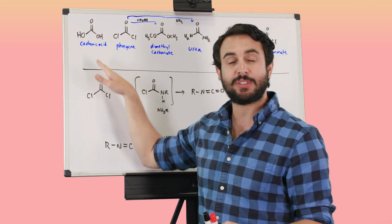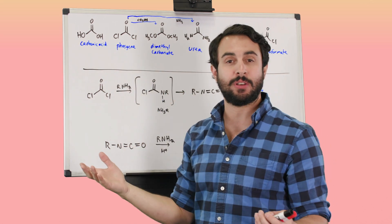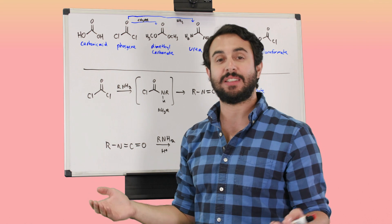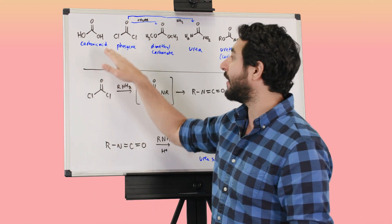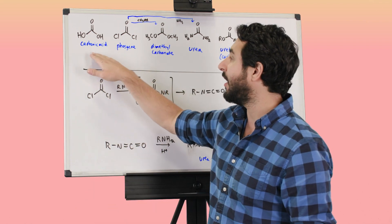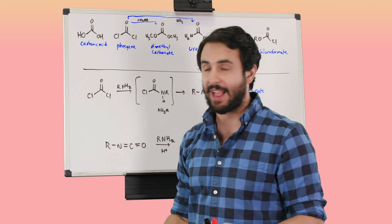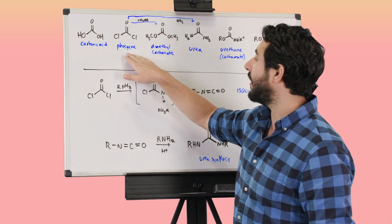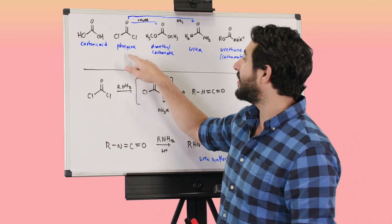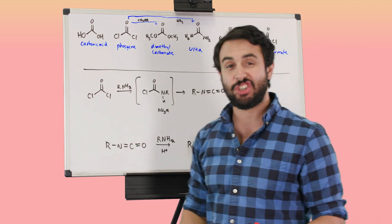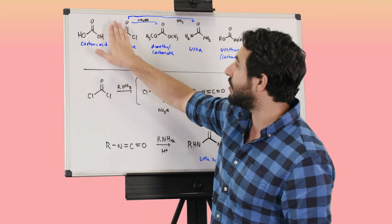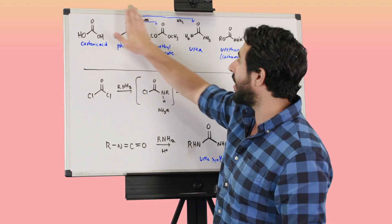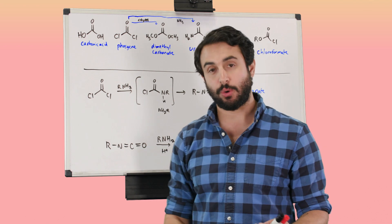Some of carbonic acid's derivatives are very important substrates or even intermediates in certain synthetic techniques, so we want to look at some of the derivatives of carbonic acid. Let's look at this dichloride — this is called phosgene. Just the way carbonic acid is sort of a double carboxylic acid, we could think of phosgene as sort of a double acid chloride.